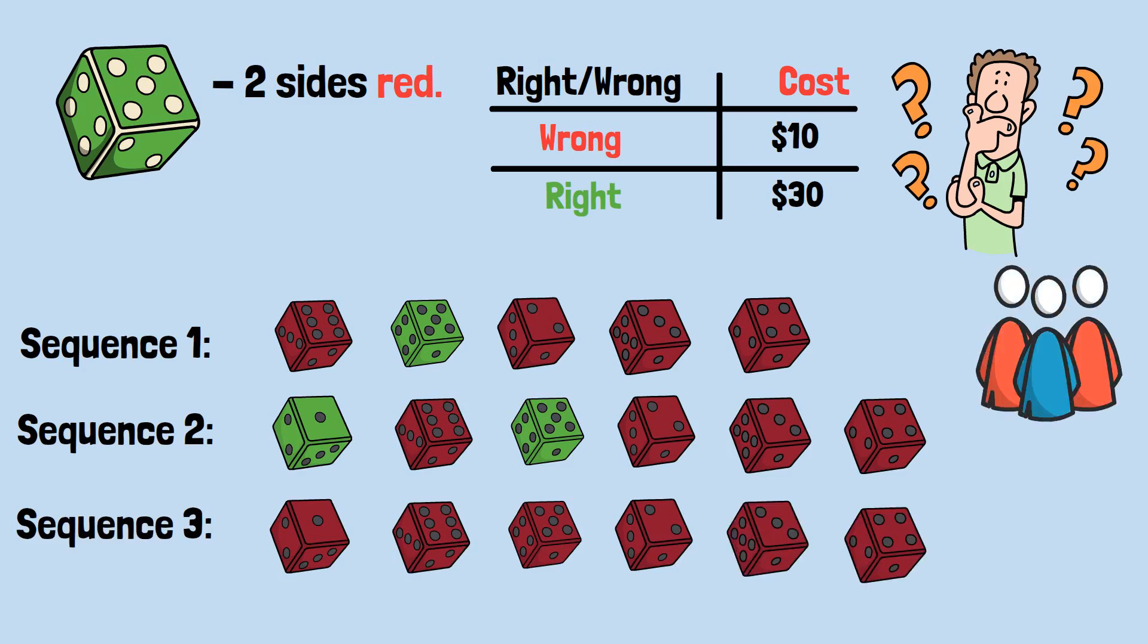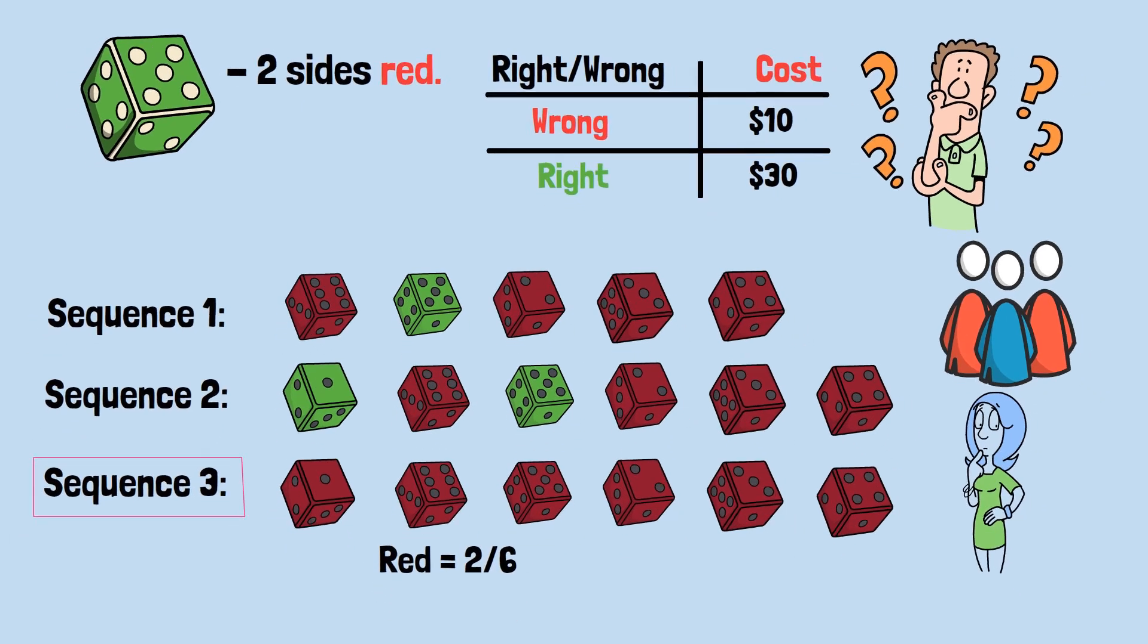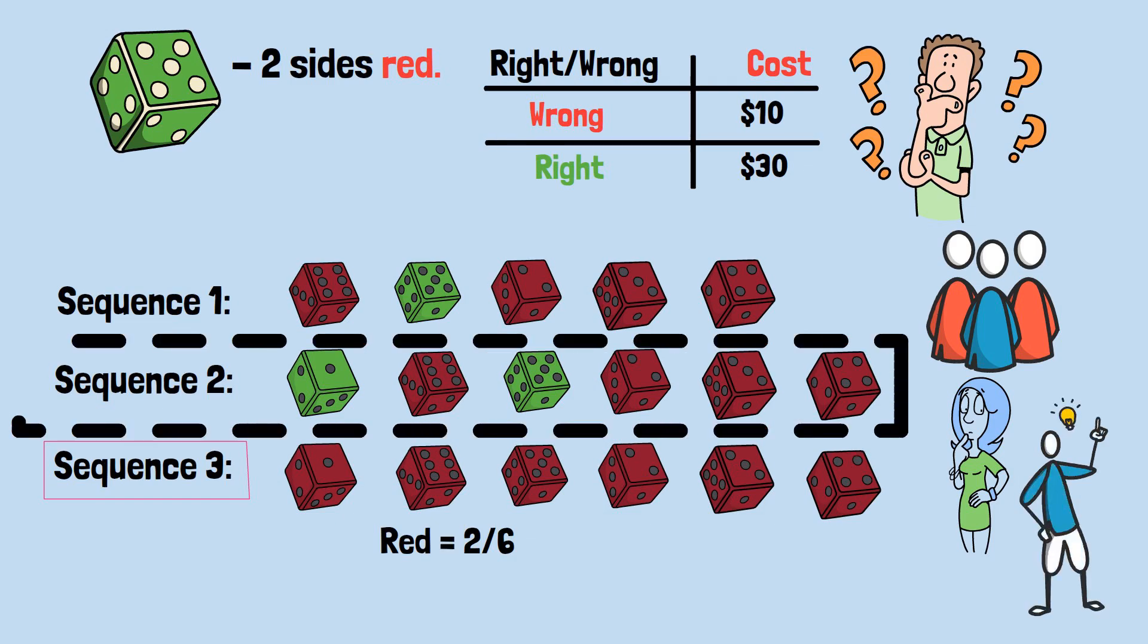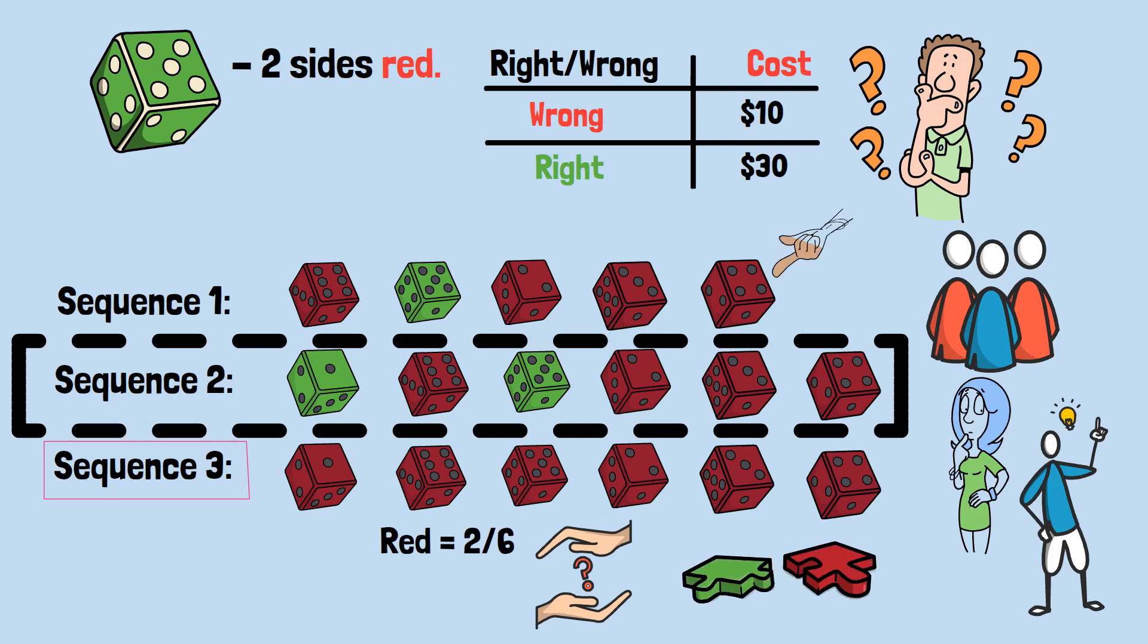When people were polled, choice preferences went 2, 1, and 3. And that is weird. None of the three sequences are that common because they're so red-heavy, and red is only two of the six sides of the die. But our cognitive bias tells us to choose the second sequence because it's got a nice little mix. I don't know why I did that. It's got a nice little mix of red and green, even though the first sequence is actually contained in the second one.